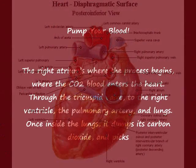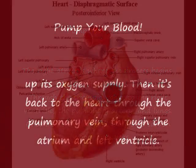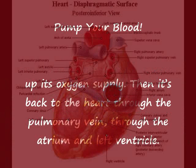The right atrium is where the process begins, where the CO2 blood enters the heart. Through the tricuspid valve, through the right ventricle, the pulmonary artery and lungs. Once inside the lungs it dumps this carbon dioxide and picks up its oxygen supply. Then it's back to the heart, through the pulmonary vein, through the atrium and left ventricle.